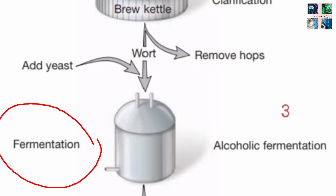The next step is fermentation, which takes place in the fermentation tank where special brewing yeast is added. The yeast turns the malt sugar into alcohol and carbon dioxide. As soon as the malt sugar has fermented, the yeast sinks and is collected. Depending on the type of yeast and wort preparation used, a top- or bottom-fermented beer is produced.